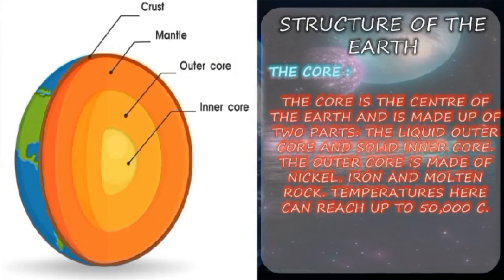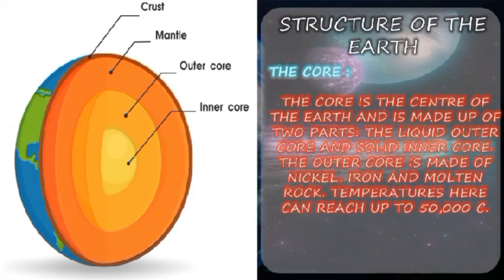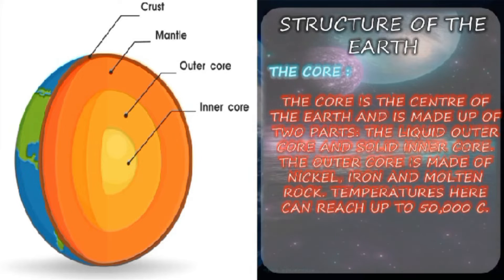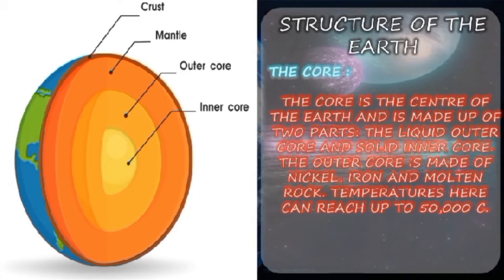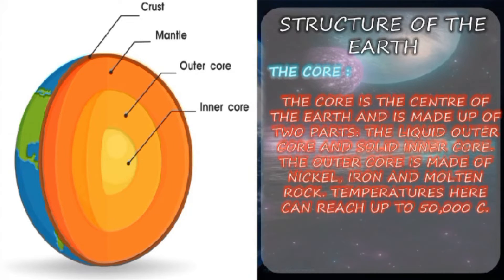The core is the center of the Earth, made up of two types: a liquid outer core and a solid inner core. The outer core is made up of nickel, iron, and molten rock. Temperature here can reach up to 5,000°C. The outer core lies between 2,900 kilometers to 5,100 kilometers below the Earth's surface. The inner core extends from the center of the Earth to 5,100 kilometers below the surface. The inner core is believed to be composed primarily of iron (80%) and some nickel. The outer core is composed of iron mixed with nickel and trace amounts of light elements.